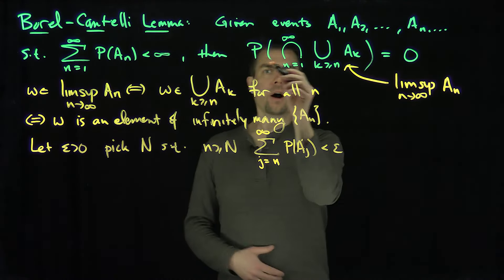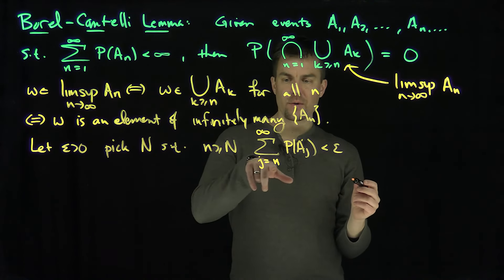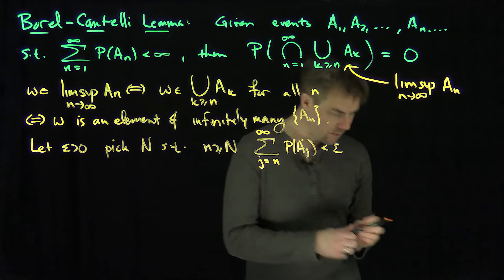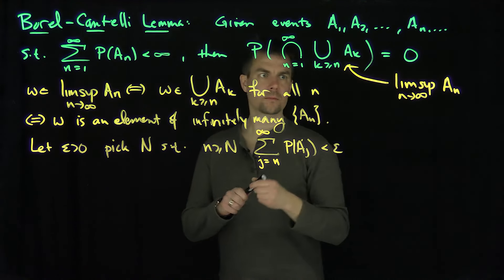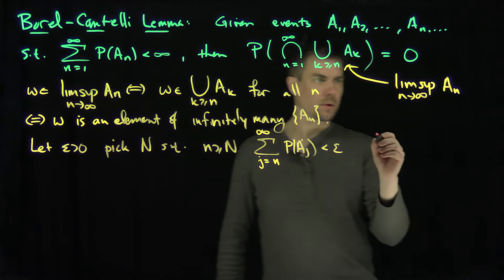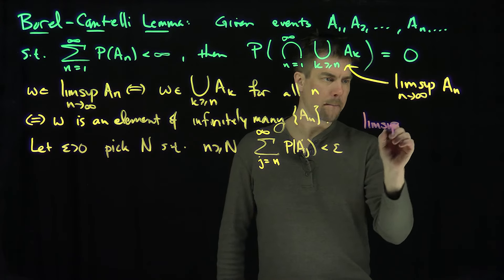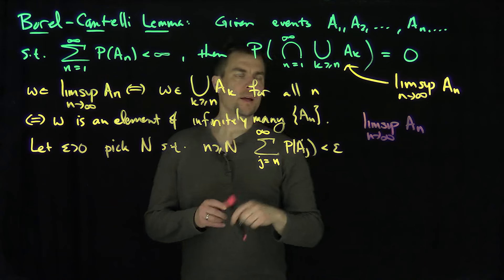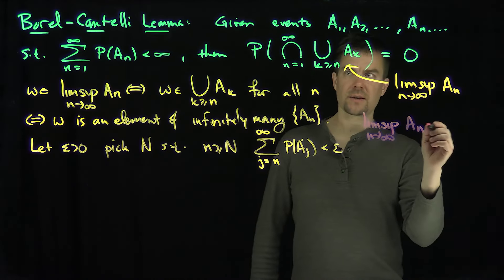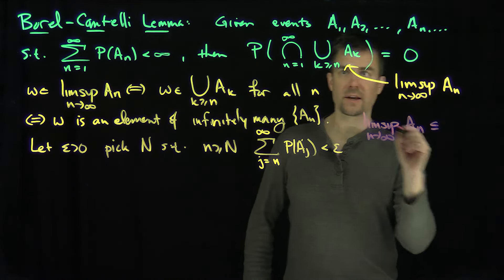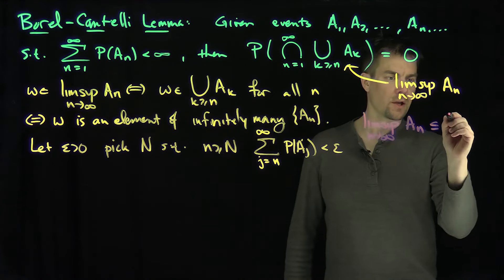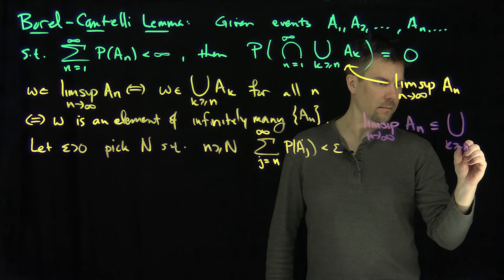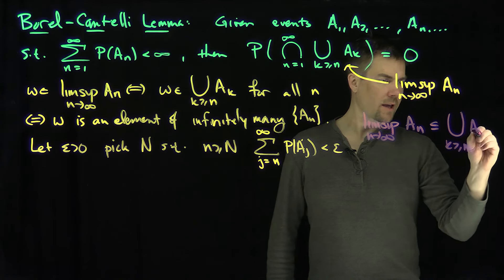In particular, the probability of the limsup is less than or equal to these probabilities for any n. Note: the limsup as n goes to infinity of AN is a subset of any of these things — it's contained in the union over k going from n to infinity, and I'll say an m over here, of AK, for any m.